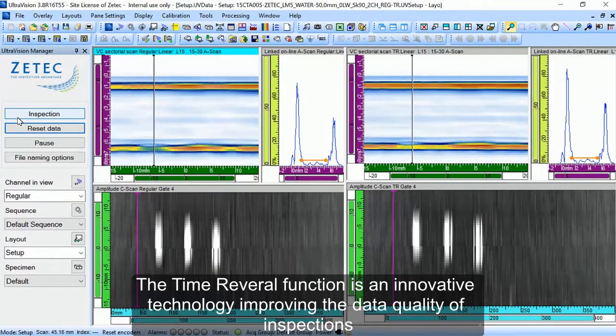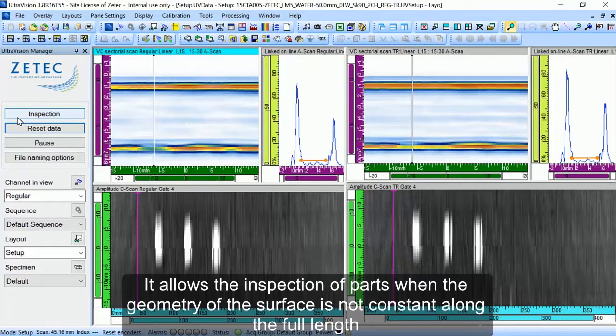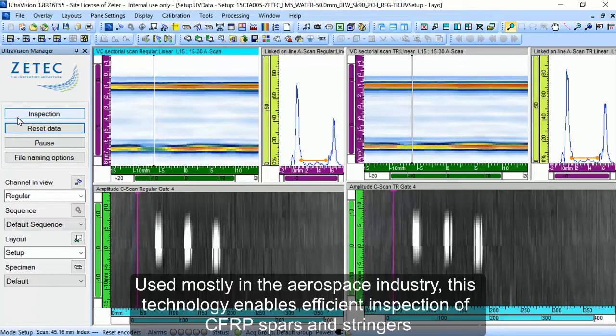The time reversal function is an innovative technology improving the data quality of inspections. It allows the inspection of parts when the geometry of the surface is not constant along the full length.